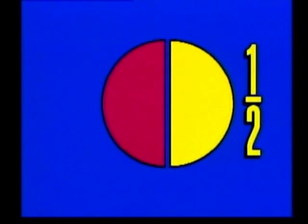One half of this circle is red, and one half is yellow. If we divide our circle into four equal parts, two fourths describes the yellow part of the circle. If we divide the circle into eight equal parts, four eighths of the circle is yellow.